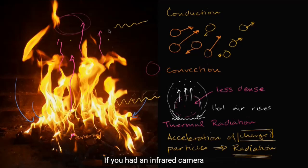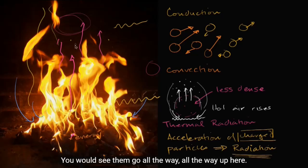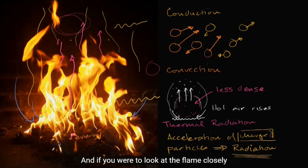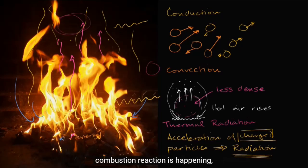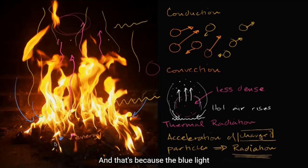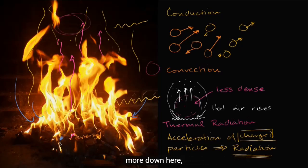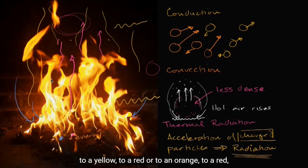If you had an infrared camera, you would see the flames being much larger, going all the way up. And if you look at the flame closely, you would see that right where the combustion reaction is happening, the flame looks blue. That's because blue light is higher energy light, and the particles are being accelerated more down there. Then it goes from blue to white, to yellow, to orange, to red, and then to your regular eyes it disappears.